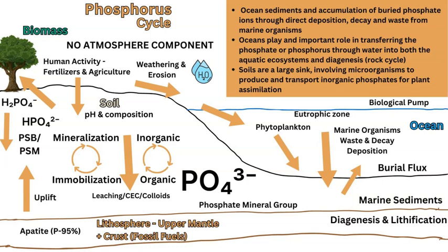The consequence of excess phosphorus from fertilizers is that it flows with water — as an erosional agent — into bodies of water, causing eutrophication and algal blooms. Algae consume the excess phosphorus and grow exponentially in a bloom, depleting oxygen in marine environments such as lakes or oceans, creating anoxic conditions that cause serious issues for food webs and food chains due to the lack of oxygen.